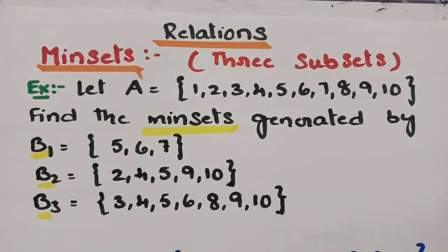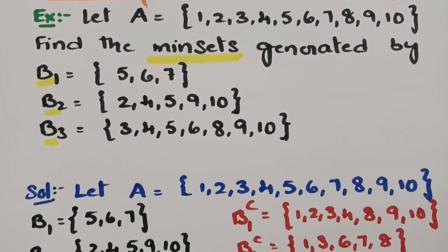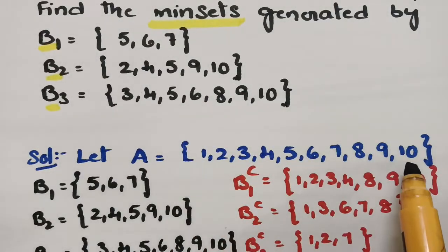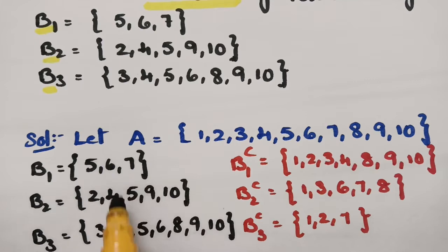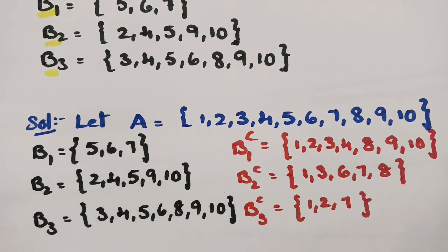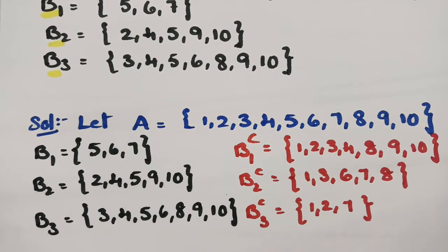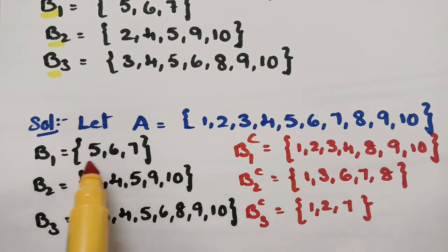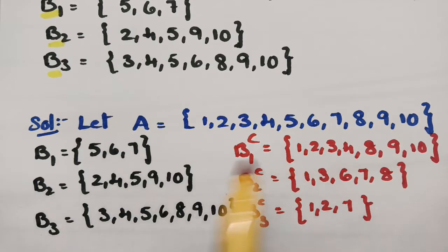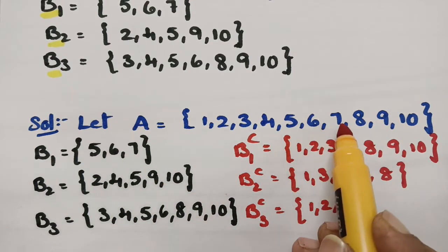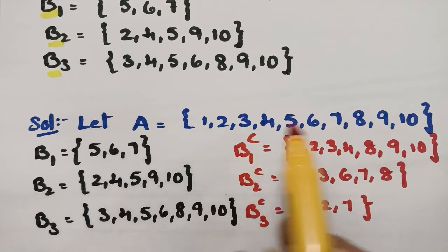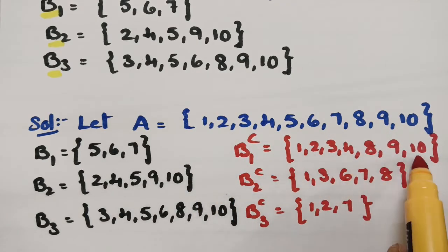How do we find the MinSets? First, we need to understand what the MinSet A is — A is given as {1 to 10}. These three are the subsets. First of all, we have to find the complements for each and every subset. The complement of B1 = {5, 6, 7} is everything in A other than 5, 6, 7 — that is {1, 2, 3, 4, 8, 9, 10}.